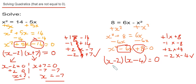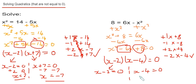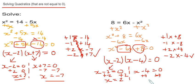We just need to split this into two equations. The first one is x minus 2 equals 0 and the second one is x minus 4 equals 0. Solving the left side, we add 2 to both sides giving x equals 2. Solving the right side, we add 4 to both sides giving x equals 4. And there are our two solutions.